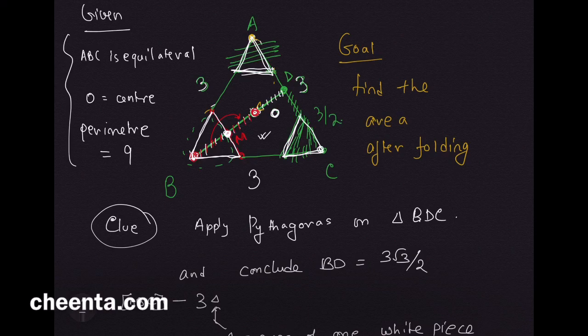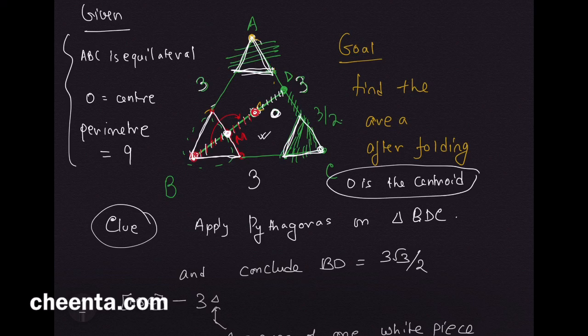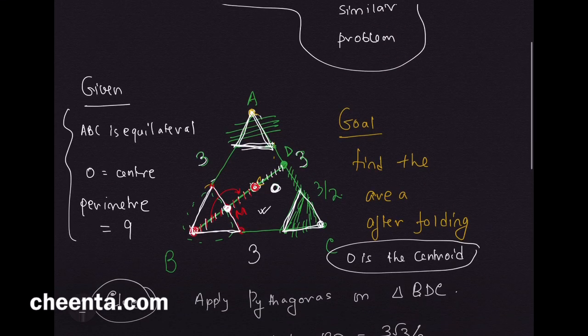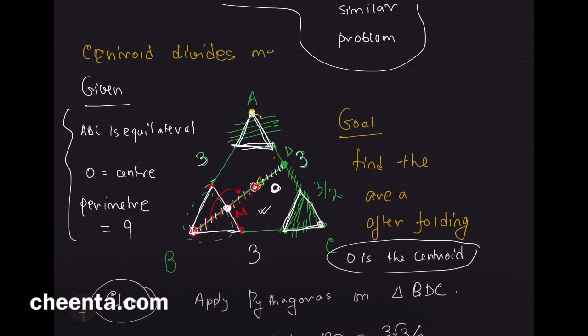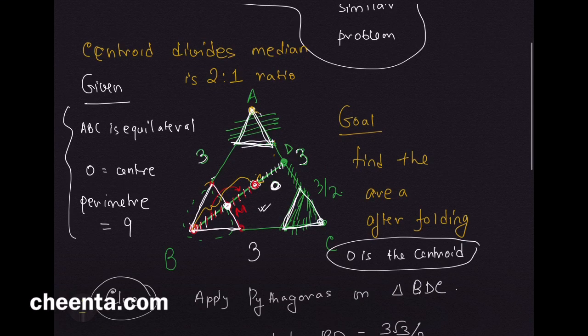O is also the centroid because the triangle is equilateral. The centroid divides median in 2:1 ratio. BO is two parts and OD is one part.